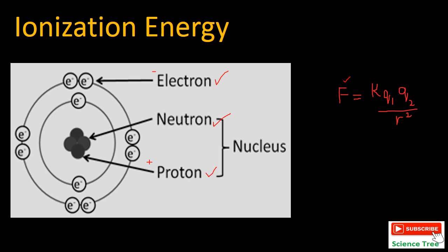The electrons present in inner shells will feel more nuclear charge because they are closer to the nucleus. The electrons in the outer shell will feel less effective nuclear charge. Therefore, it will be easier to remove an electron from the valence shell of an atom, which is all concerned with ionization energy.